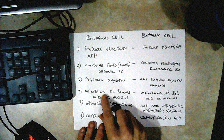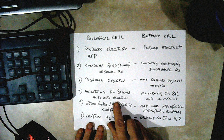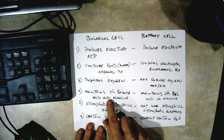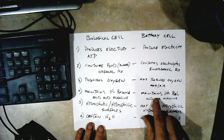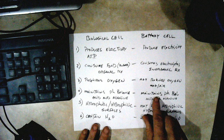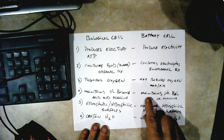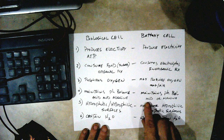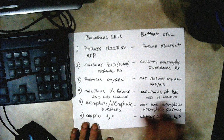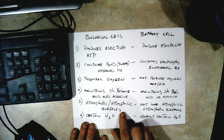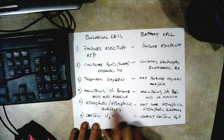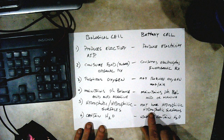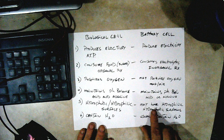Biological cells all maintain a pH balance, and they have acids and alkalines to do that with. A regular battery cell also maintains a pH balance — unknown to most people — and it's visible at the plates if you measure them; they're usually acid or alkaline type. Biological cells all have hydrophobic and hydrophilic surfaces. Battery cells may have hydrophilic and hydrophobic surfaces, but they usually do not because they're dealing with metals.